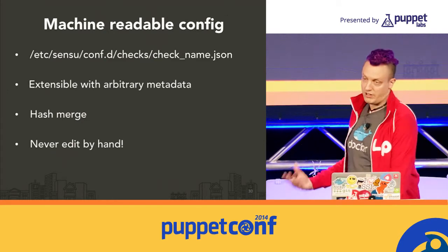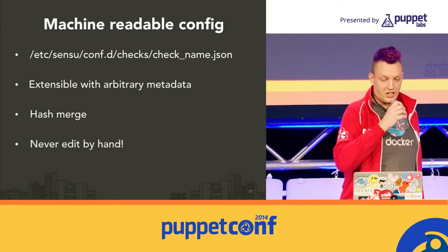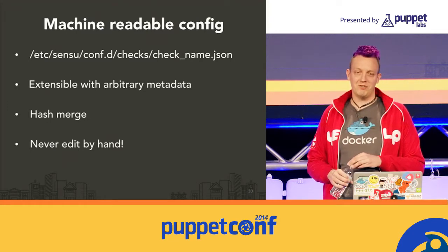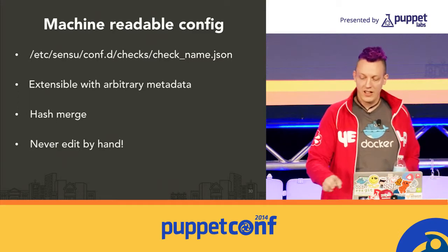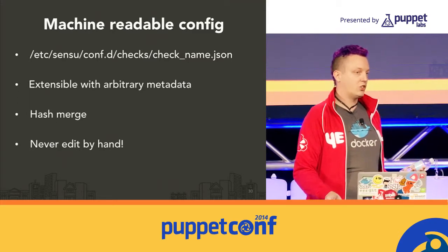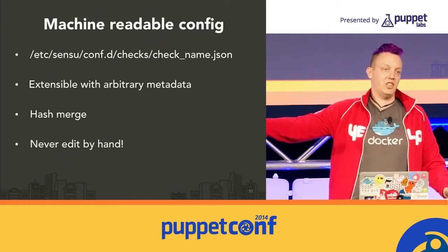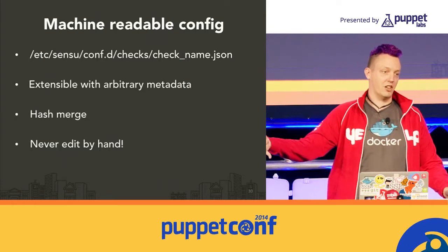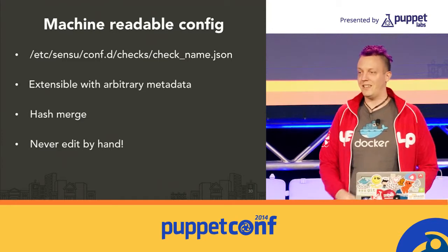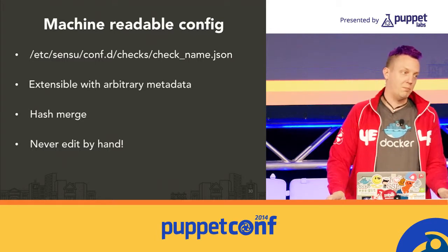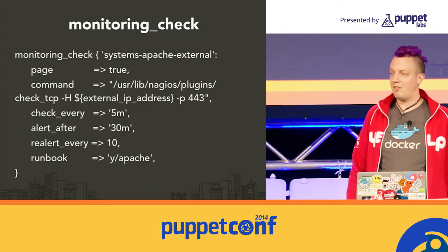Going back to what's really nice about Sensu: machine-readable config, arbitrary extensible metadata. You just drop JSON files on disk. JSON is generally a bad choice for configs you edit by hand because there are no comments, but I've come to the strong conclusion that if you're editing your monitoring config by hand, you're doing it wrong. Puppet is configuring the service, and the same Puppet code should be configuring the monitoring. The fact that Sensu's config is JSON is great because it makes it easy to parse — it's not meant to be human readable at that level. The human-readable part is what we have Puppet for.